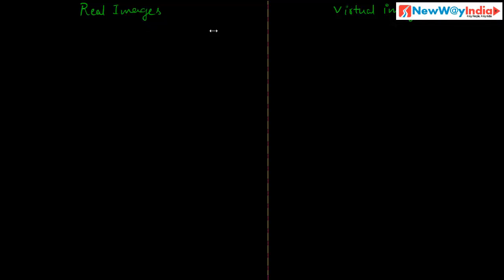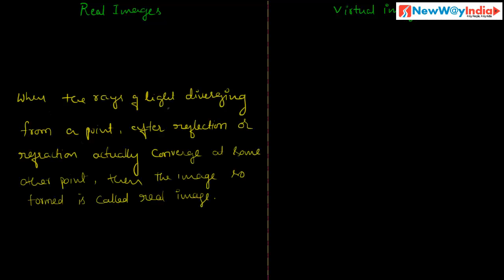Let us discuss about real images and virtual images. When the rays of light diverging from a point, after reflection or refraction, actually converge at some other point, then the image so formed is called a real image. The rays of light are first diverging from a point, and after reflection or refraction they converge at some other point, then a real image is formed.